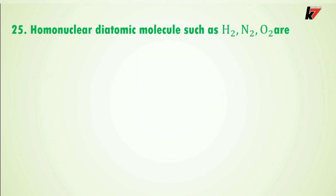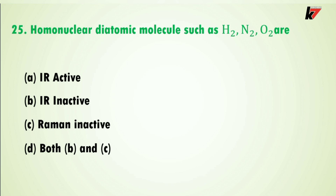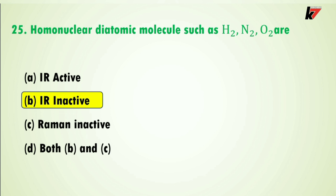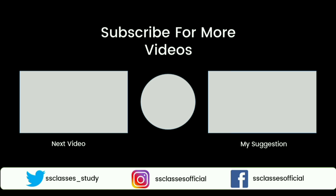Question 25: homonuclear diatomic molecules such as H₂, N₂, O₂ are — option A IR active, option B IR inactive, option C Raman inactive, option D both B and C. The correct answer is option B: homonuclear diatomic molecules are IR inactive. IR inactive molecules are not studied in IR spectroscopy. Only IR active molecules — those which possess a dipole moment, like HCl, H₂O, and NH₃ — are studied in IR spectroscopy. I hope you have understood these 25 questions. Thanks for watching.